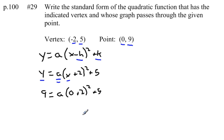Now, once I do that, the only variable left is a, so I should be able to solve for a. So let's just simplify what we have. 9 equals, 0 plus 2 is 2, square that we get 4. So I have a times 4, plus 5.